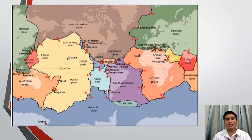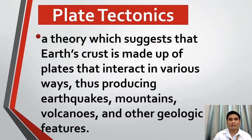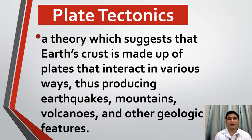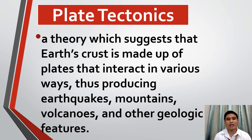Scientists theorize that this is because of the interaction between these huge masses of land. Scientists call this plate tectonics. It is a theory which suggests that Earth's crust is made up of plates that interact in various ways, thus producing earthquakes, mountains, volcanoes, and other geologic features.